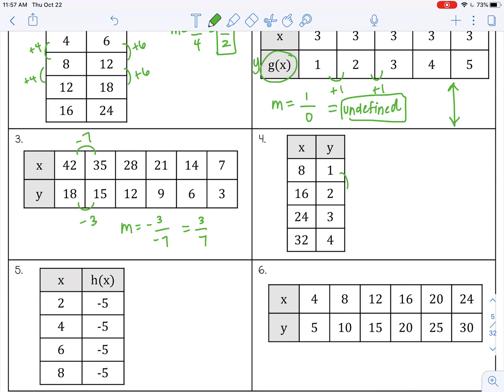All right, number four, plus one, plus eight. So my slope is one over eight. That doesn't reduce, so that's my answer.